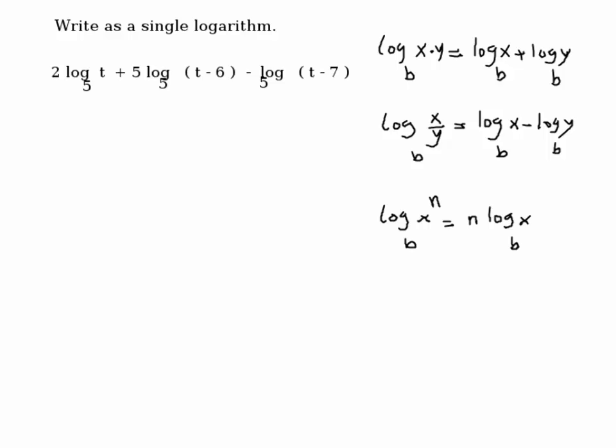So let's take a look. Looks like the first term here. I can move that 2 right on top of that t using the third property. This would be the same as log of t squared with the base 5.